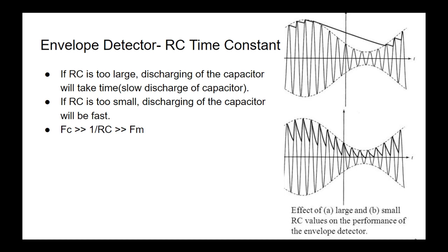There is a limitation of the envelope detector related to the RC time constant. If the RC time constant is too large, discharging of the capacitor will take a very long time, and the capacitor will discharge very slowly. In that case, when the modulated signal amplitude is very low and the capacitor is discharging relatively slowly, we will not get the actual envelope of the modulated signal but instead get a clipped envelope.